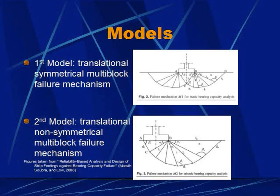Two models were developed to determine the failure mode of strip footings. The first model is a translational symmetrical multi-block failure mechanism used for determining the bearing capacity of a vertically loaded footing without pseudo-static seismic loading. It creates failure planes symmetrical about the center line of the strip footing using 12 rigid blocks on each side. The second model is a translational non-symmetrical multi-block failure mechanism used to determine the bearing capacity with pseudo-static seismic loading, where the failure plane radiates 180 degrees from one corner of the strip footing, also using 12 rigid blocks. Bearing capacity is found by equating the total rate of work done by the foundation load, slope weight in motion, horizontal seismic loads, and ground surface surcharge to the total rate of energy dissipation along the lines of velocity discontinuities.